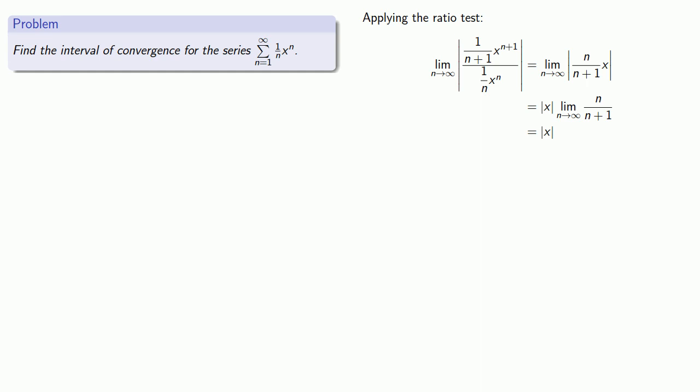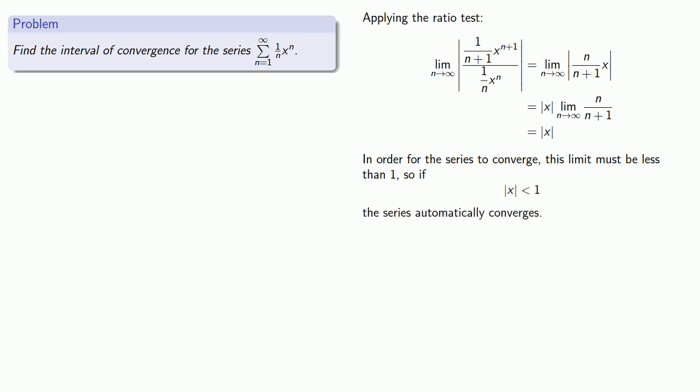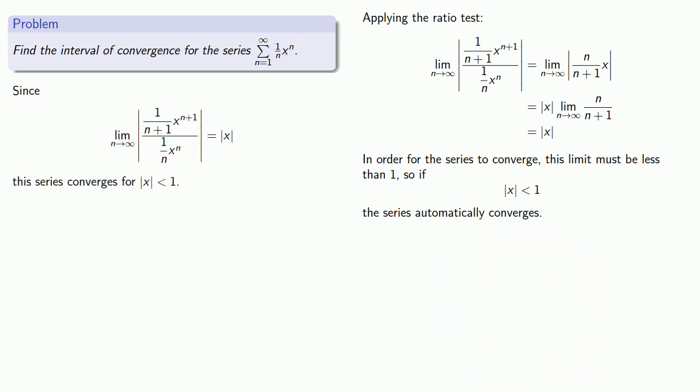At this point we can play the game of wishful thinking. In mathematics this is frequently useful because we can often get what we want. We want the series to converge, so the limit from the ratio test must be less than 1. Therefore if the absolute value of x is less than 1 the series automatically converges. Remember that if the limit equals 1 the ratio test is inconclusive, so if the absolute value of x is equal to 1 the ratio test doesn't tell us whether the series converges or diverges.